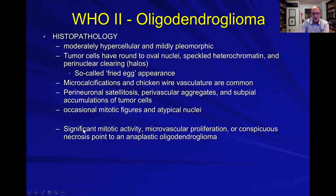If they have significant mitotic activity, vascular proliferation, and necrosis, then of course you're talking about the anaplastic oligodendrogliomas.